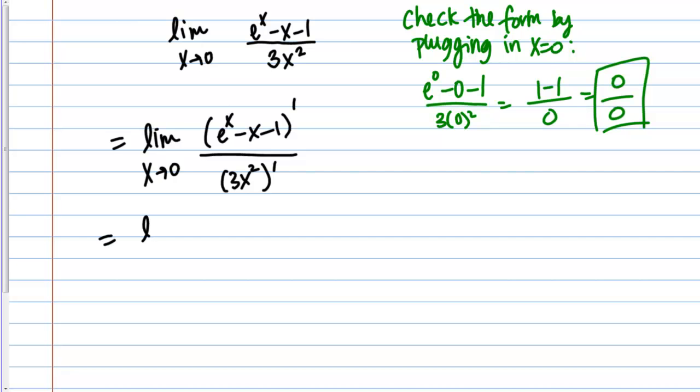Let's actually compute those derivatives then. If I'm looking at the top there, the derivative of E to the X is E to the X. Then I'm going to get minus 1 and then minus 0. Then on the bottom, if I take that derivative, I am going to get 6X.